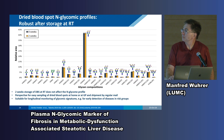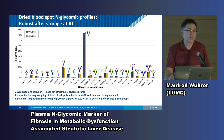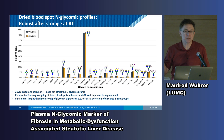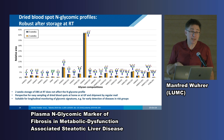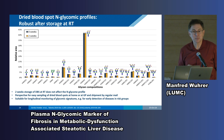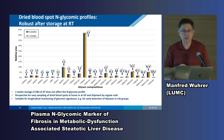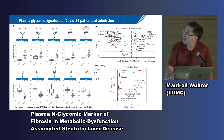These signatures are stable over some weeks. What you could envision is: you go to the practitioner or do some sampling at home — just a dry blood spot. You put it in an envelope, send it to a lab, it's assessed, and within maybe a week or two you get your information: your liver is doing fine, doing better, or you need additional attention.